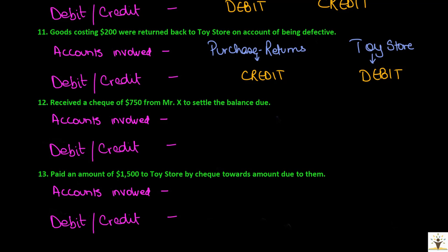Transaction: received a cheque of $750 from Mr. X to settle the balance due. We have a bank account, as the amount is received by cheque, and Mr. X. As a result of this transaction, the bank account increases — hence bank account will be debited. And Mr. X's balance reduces after this transaction — hence Mr. X is credited.